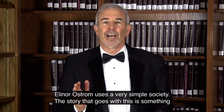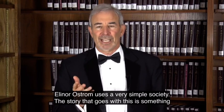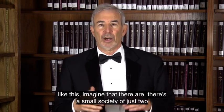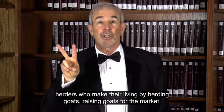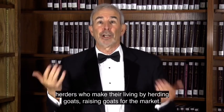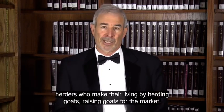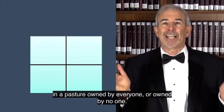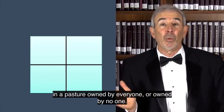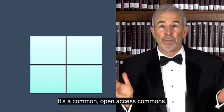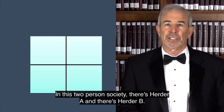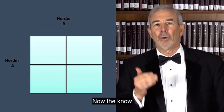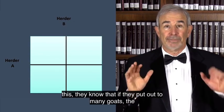Let's see how the tragedy of the commons models how people might behave when they deal with a common property resource. Eleanor Ostrom uses a very simple society. The story that goes with this is something like this. Imagine that there's a small society of just two herders who make their living by herding goats, raising goats for the market. And they turn their goats out to pasture every summer in a pasture owned by everyone or owned by no one.